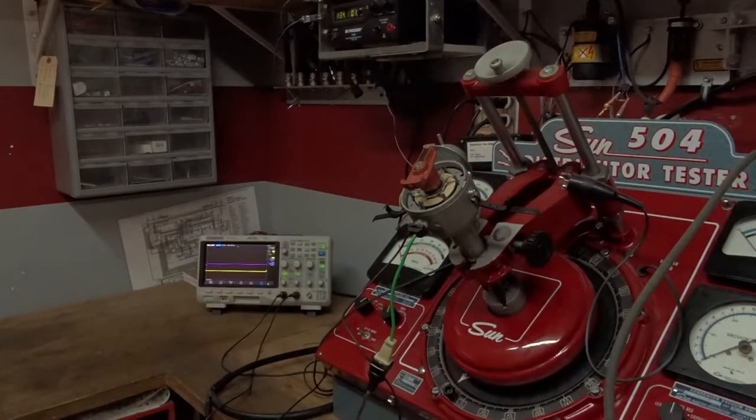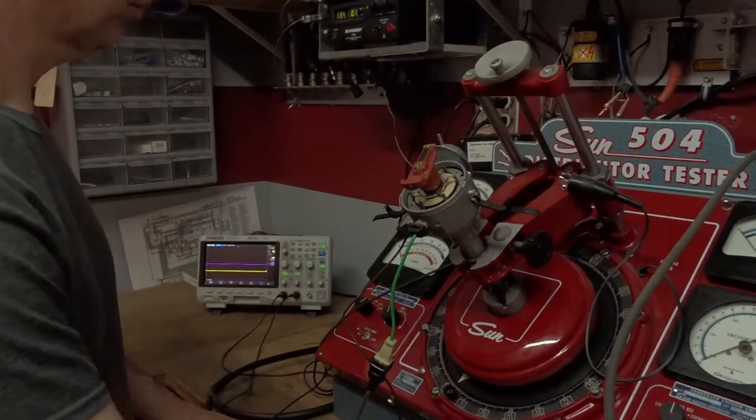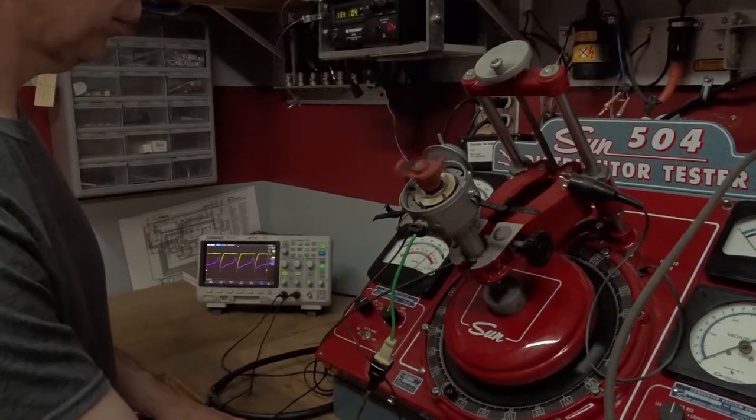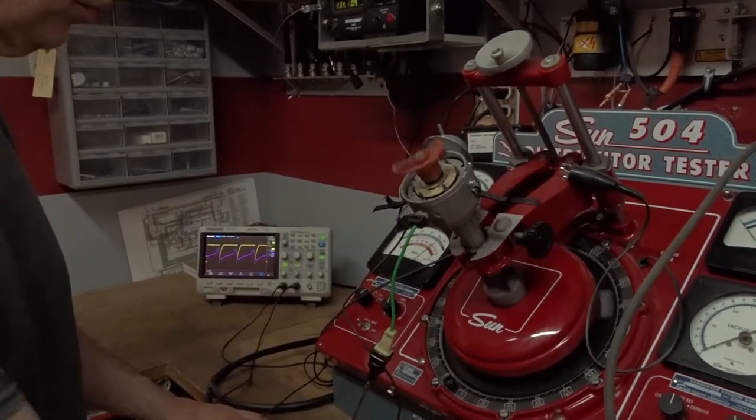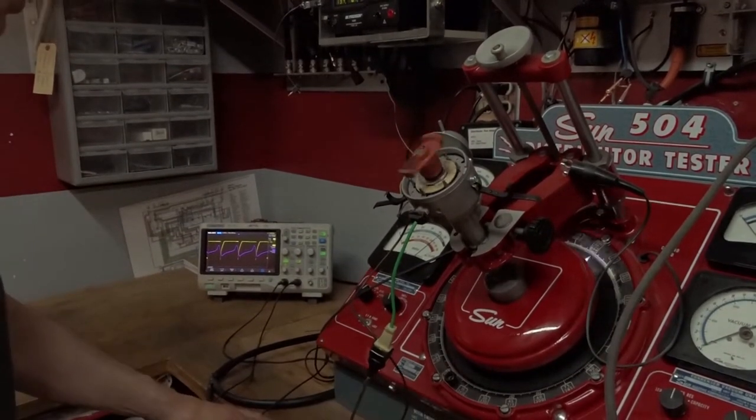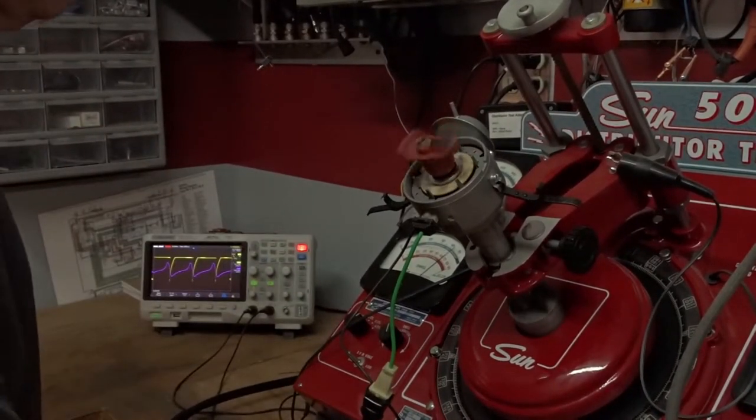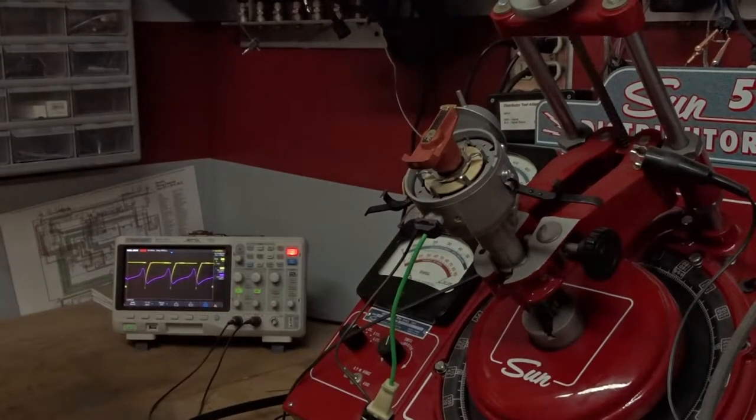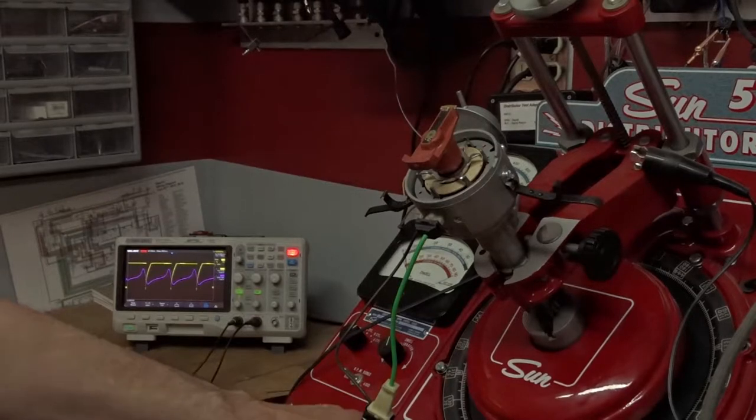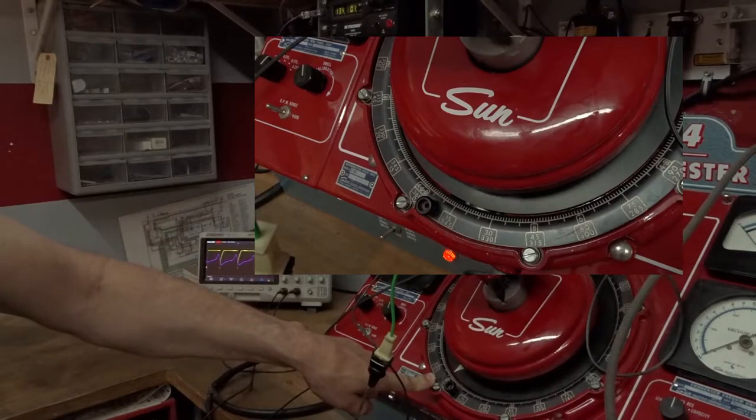We're going to run the distributor up to engine idle speed 950,000 RPM and record what's going on. What we can see from this, I've zeroed our scale on the distributor machine showing where the ignition distributor is firing.